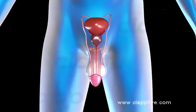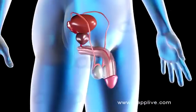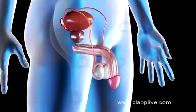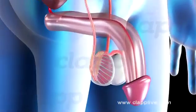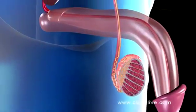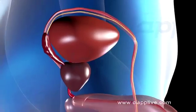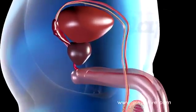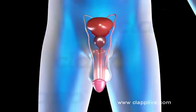The male reproductive system is located in the pelvic region. It consists of a pair of testes, accessory ducts, accessory glands, and external genitalia.